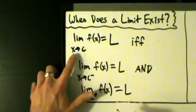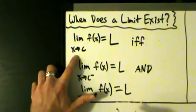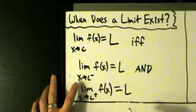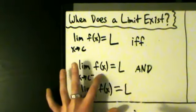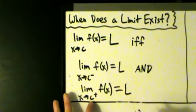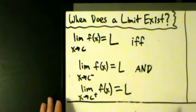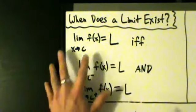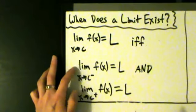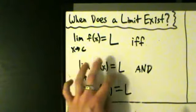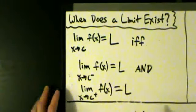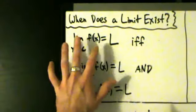So the limit as x approaches c of f of x equals L if and only if the limit as x approaches c from the left of f of x equals L, and the limit as x approaches c from the right of f of x equals L. In other words, for a limit to exist, both of the one-sided limits have to also exist and be equal to the same thing, and whatever that thing is, is what the limit's going to be equal to.